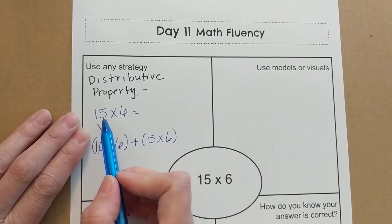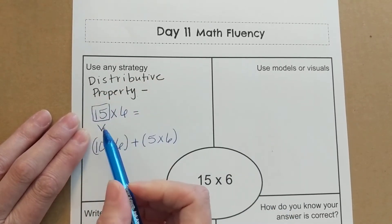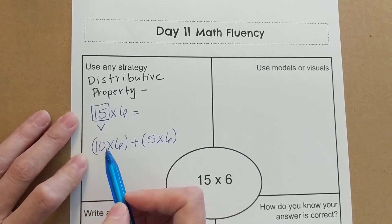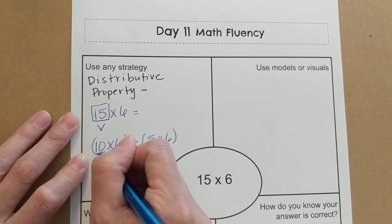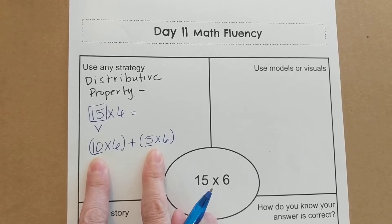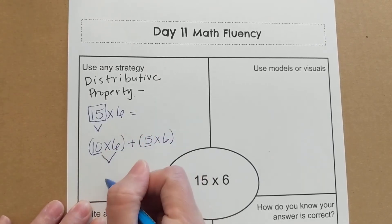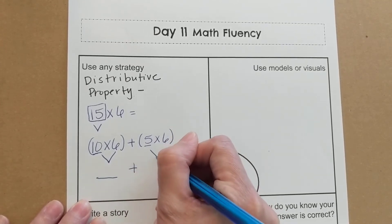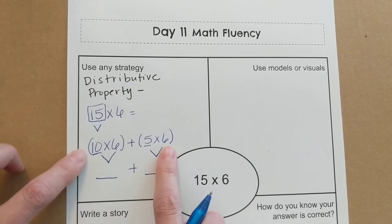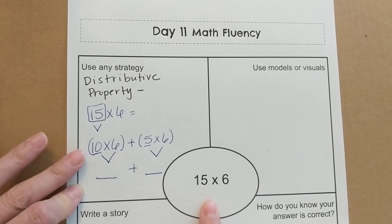We could have broken apart the 6, but really we're going to look at this 15 because that is a two-digit number. And we have not learned how to multiply past 12. So this is a way that you can multiply those larger numbers by breaking them into two different factors. So we would look at the 10 times 6, multiply that to get our answer, and add that to the 5 times 6 once you multiply those together. So this is a simple way to use a strategy and find 15 times 6.